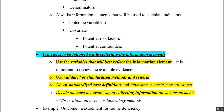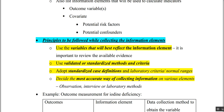The principles to be followed when collecting information elements: use variables that will best reflect the information element. It is important to review the available evidence, use validated or standardized methods, use standard case definitions, and use the most accurate way of collecting information — deciding whether you are doing observation, an interview, or using laboratory tests.